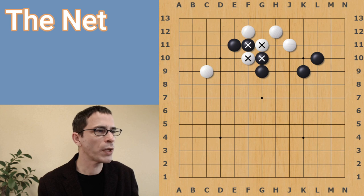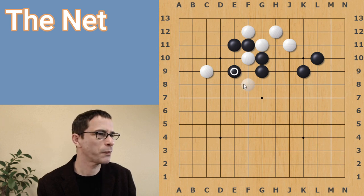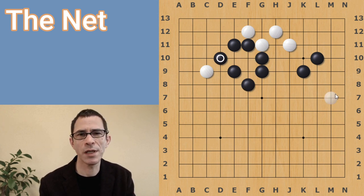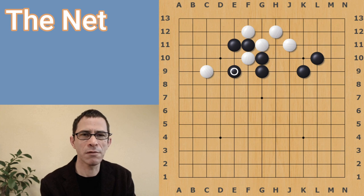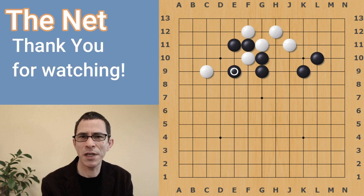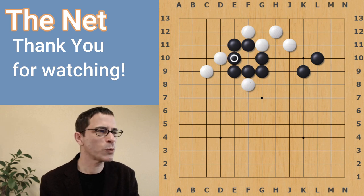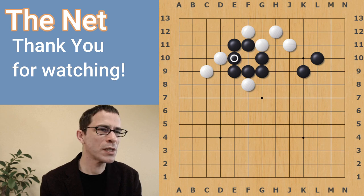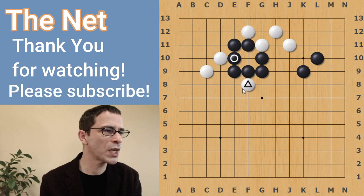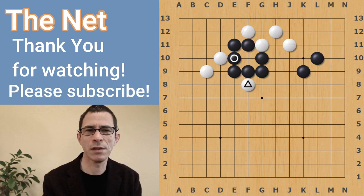This is an example where black has to capture that white stone in a net. So black plays here, and the white stone is captured. Once you have seen this position and learned it, I think the net is a relatively easy move to remember. It's almost always the same kind of shape here. I should mention that white will not try to escape. When white knows this white stone is dead, it would be better for white to sacrifice the one stone and play from the outside, placing stones on the board that do have some potential to accomplish something later in the game.